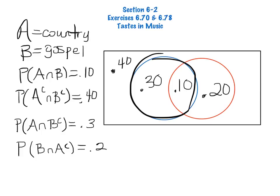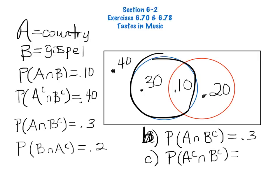Part C asks, what percent likes neither gospel nor country? Well, that's the .4 that we see here. So with making this Venn diagram, we've already answered these questions. So the probability that a student likes country but not gospel is .3. This is question B. And then question C, the probability that a student likes neither country nor gospel, that is our outside of .4.